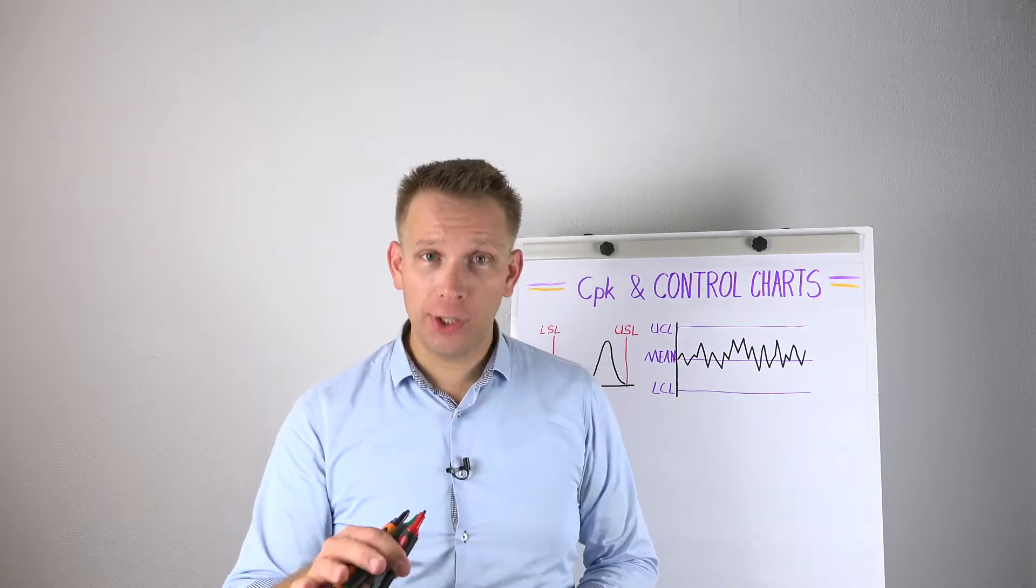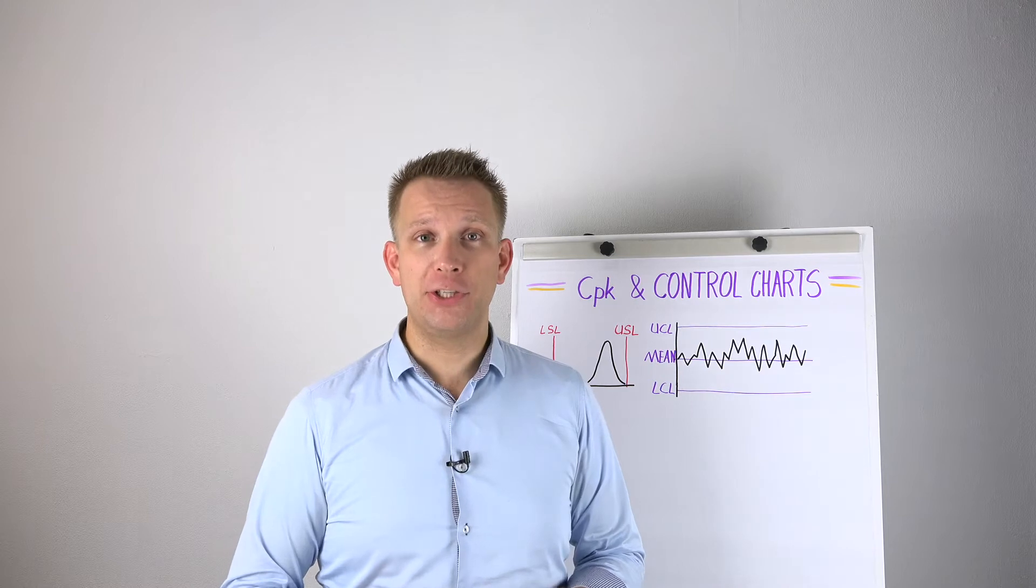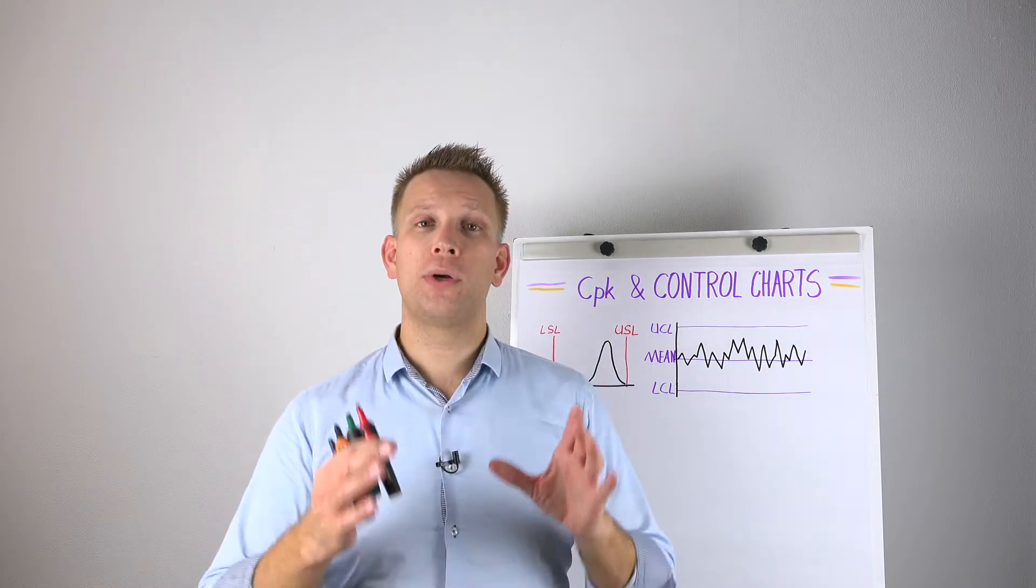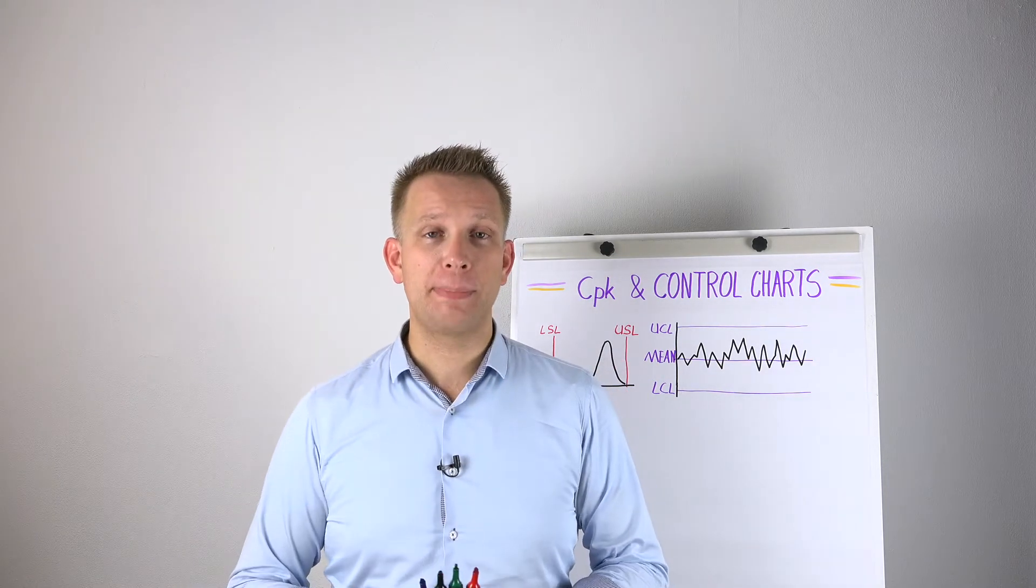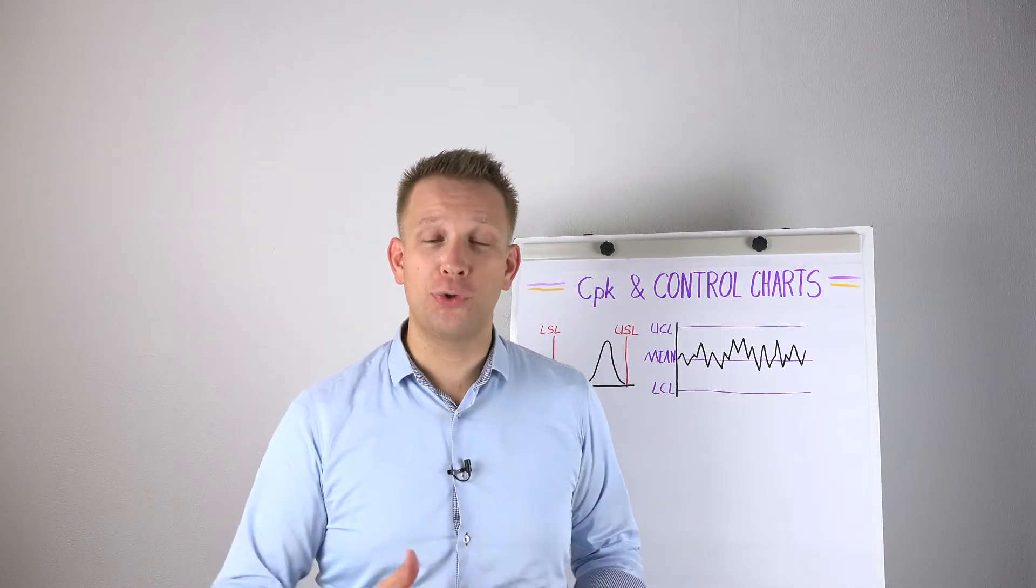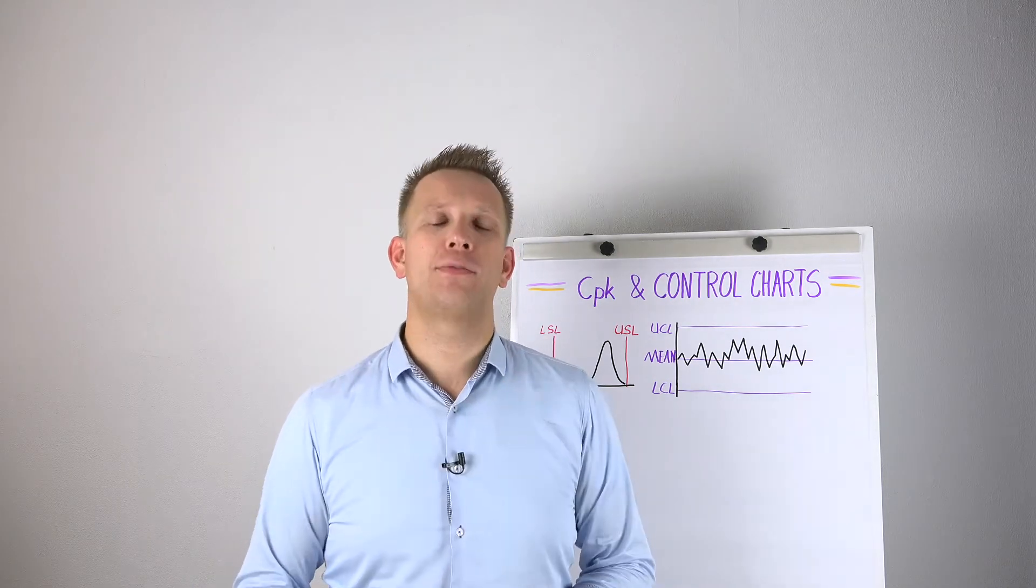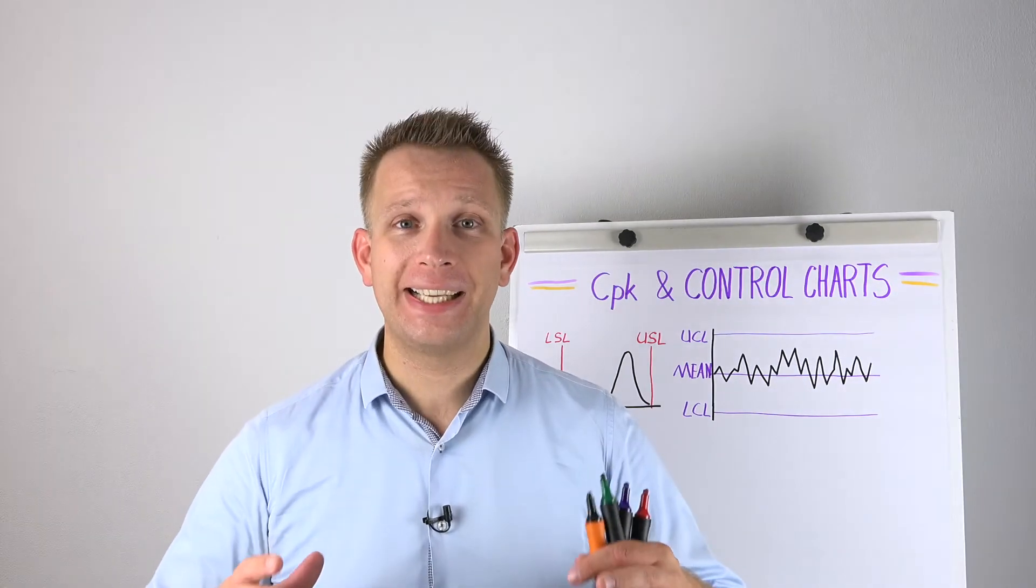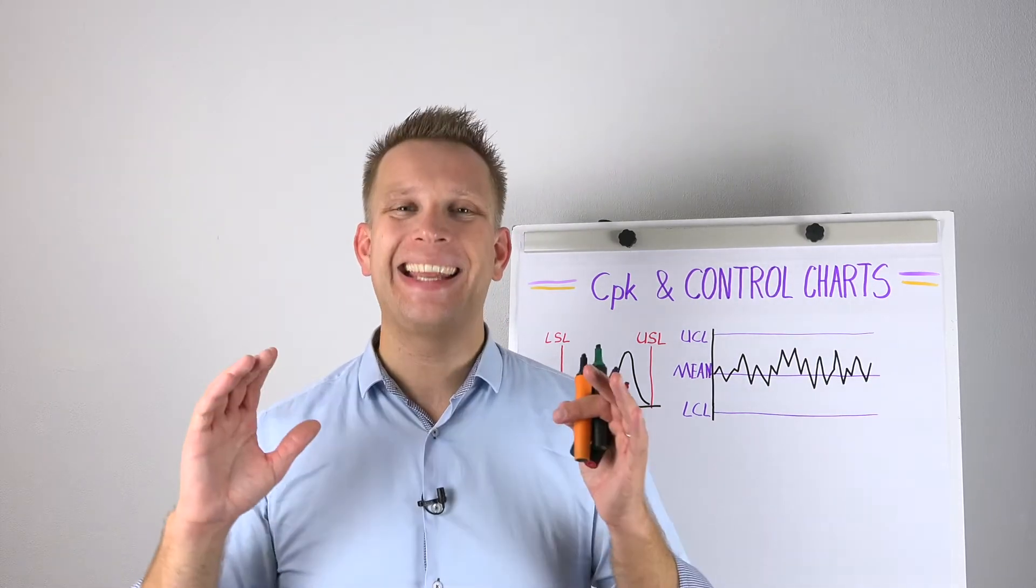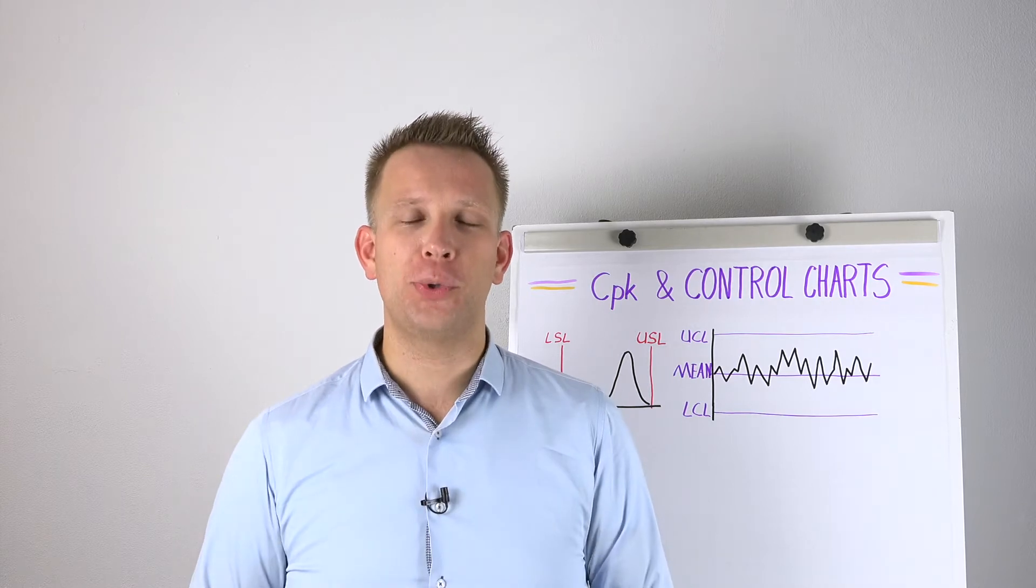You cannot read the CPK, so your process capability, from an SPC chart, nor will you read in your CPK whether or not your process is under statistical control. Whether or not your process is in control, you will not get from a CPK number. These two are not the same. They cannot be combined and they will not one give you an answer to the other.